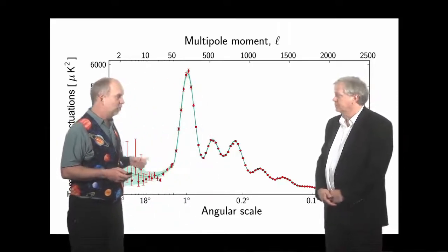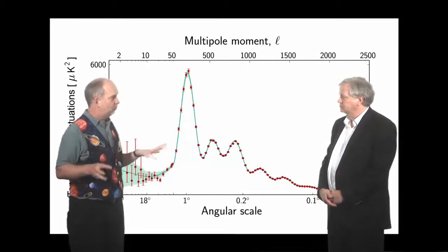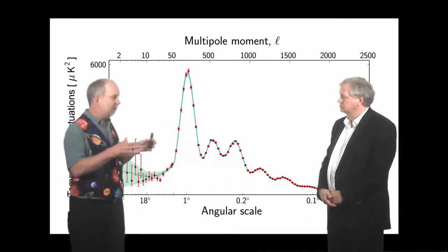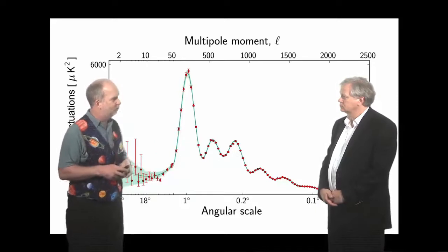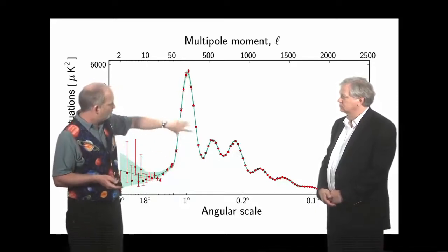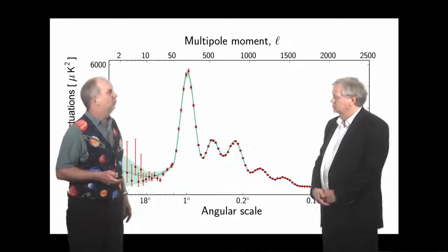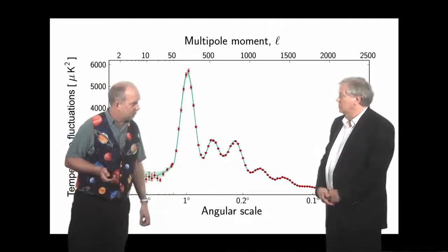Right. So, in principle, you could actually see this right now. You could look around the universe and say, are galaxies clustered preferentially on certain scales? And those scales would be these particular lumps from the oscillation, the acoustic peaks, right early in the universe.